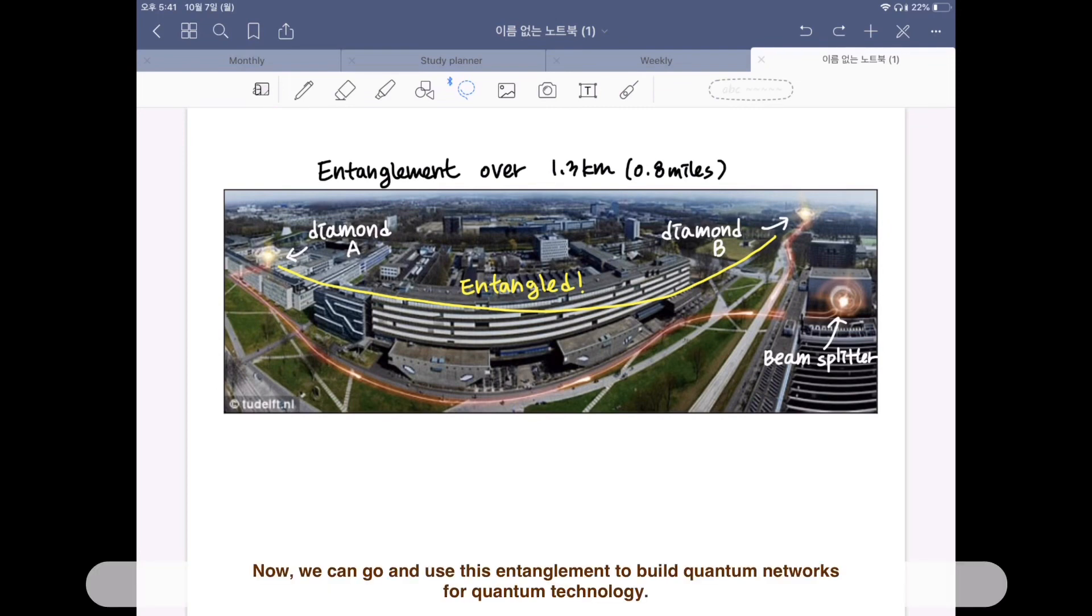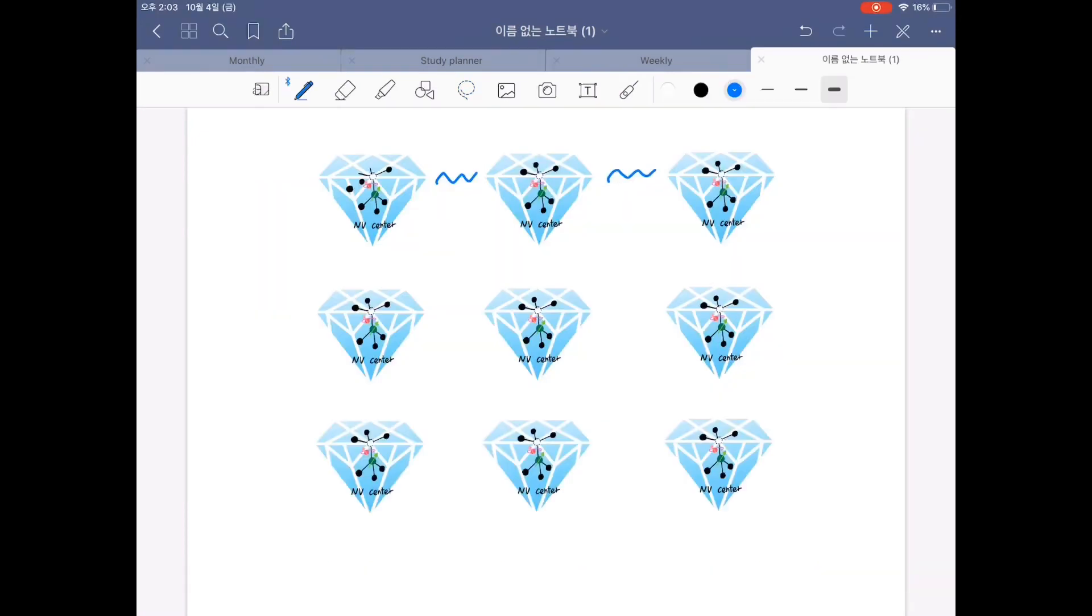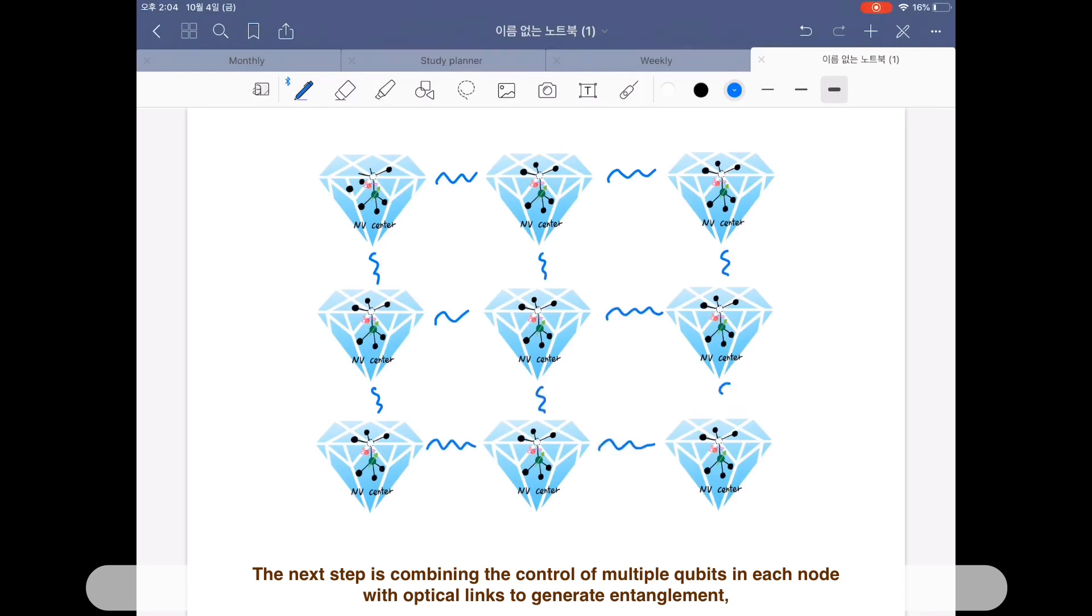Now, we can go and use this entanglement to build quantum networks for quantum technology. The next step is combining the control of multiple qubits in each node with optical links to generate entanglement